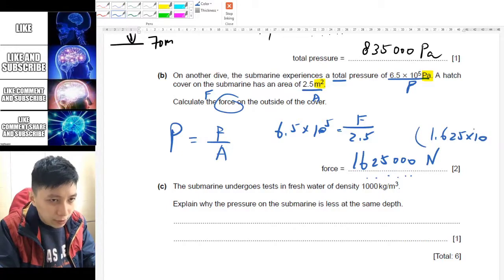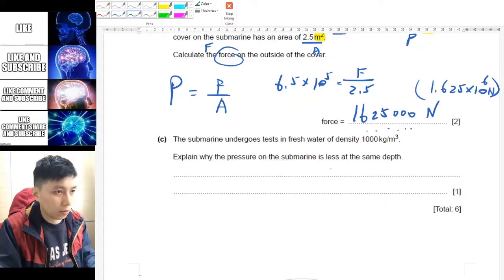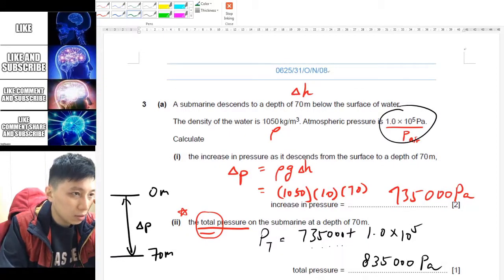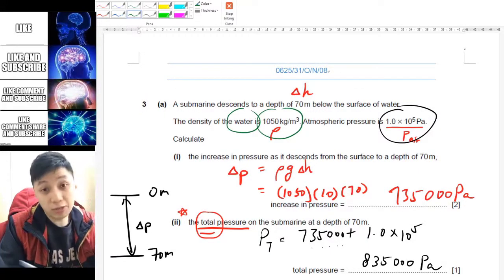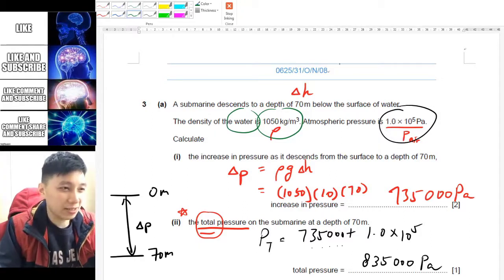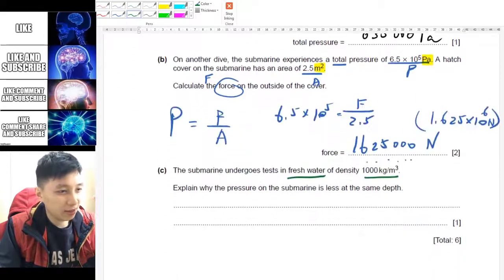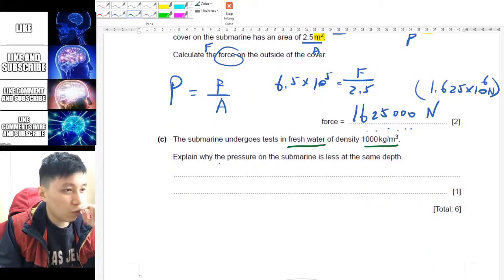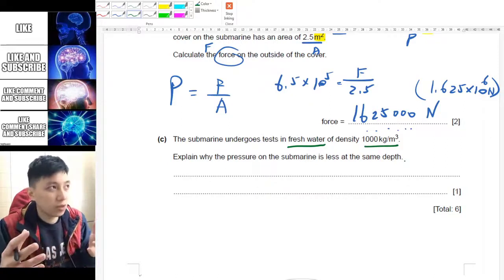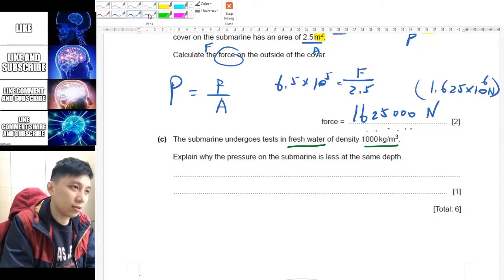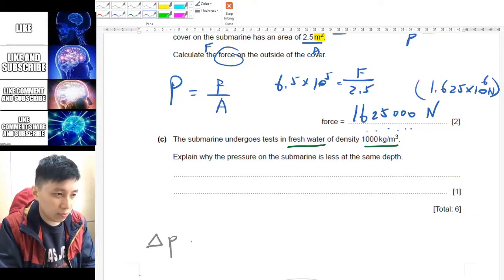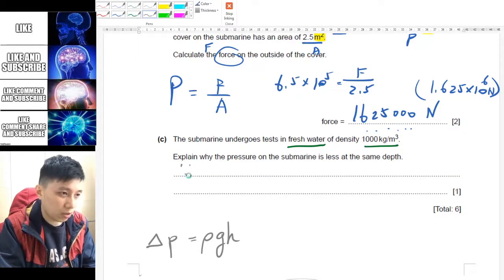Part C is that the submarine undergoes test in fresh water with this density. The one that we used was water with this - I suppose submarine works in the sea, anyway it can be river, it can be lake, it can be fresh water I guess. So I guess this is more like sea water, that's why it's a bit more dense than the fresh water. So here it asks you why the pressure is less with the same depth. Whenever you deal with this kind of physics question asking you qualitative stuff, one thing you should first think of is the equation. You don't have to write on the answer, you can write at the side.